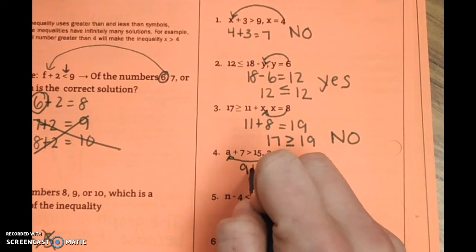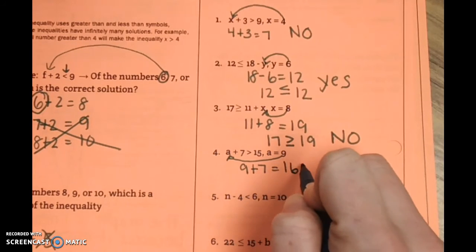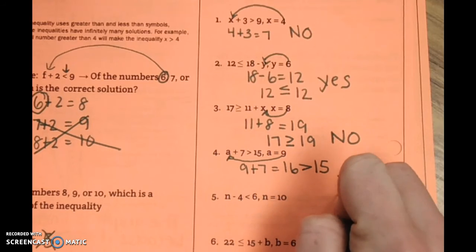9 plus 7 equals 16. 16 is greater than 15. So, we'll write yes.